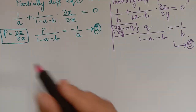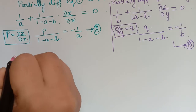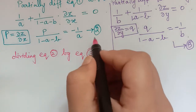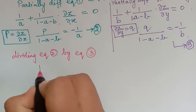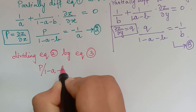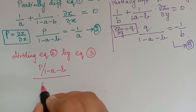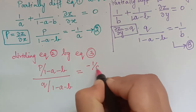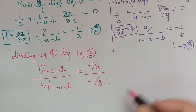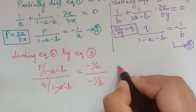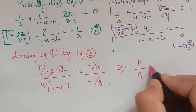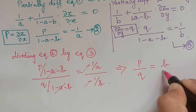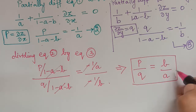As the next step, we divide equation 2 by equation 3. The left-hand side gives p/q since the (1-a-b) denominators cancel. The right-hand side gives (-1/a) / (-1/b) = b/a. So p/q = b/a. We mark this as equation 4.